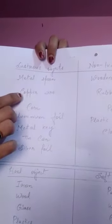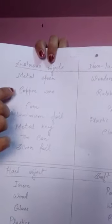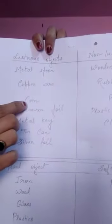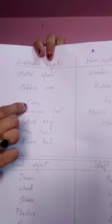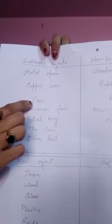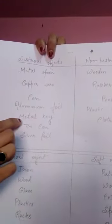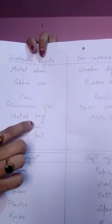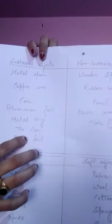Copper wire has the property to shine, so copper wire is a lustrous object. A coin — if you see a new coin, it shines very nicely, so a coin comes under lustrous objects. Aluminum foil, metal key, tin can, and silver foil — all have the property to shine, so they are grouped into lustrous objects.